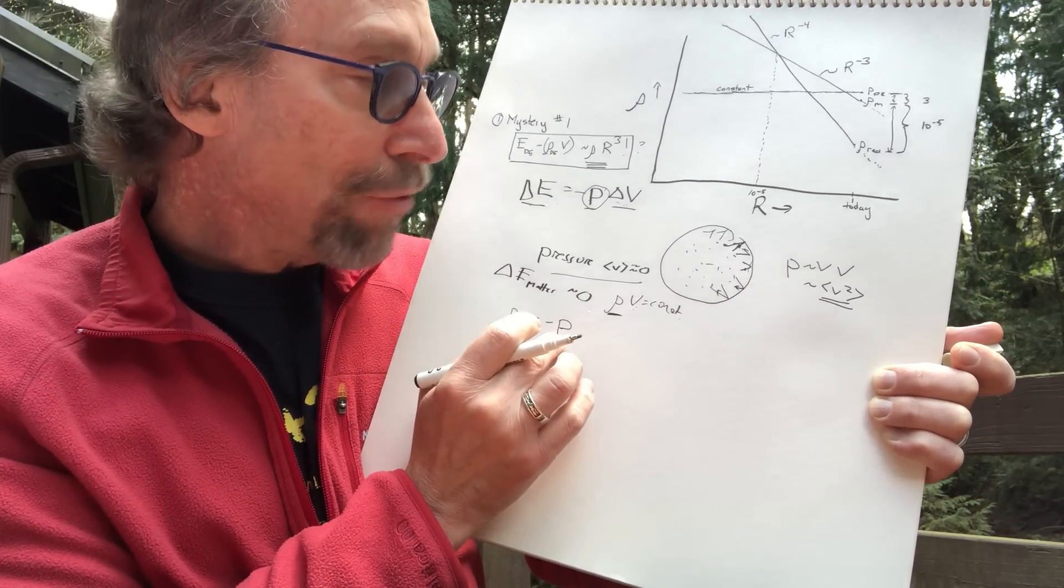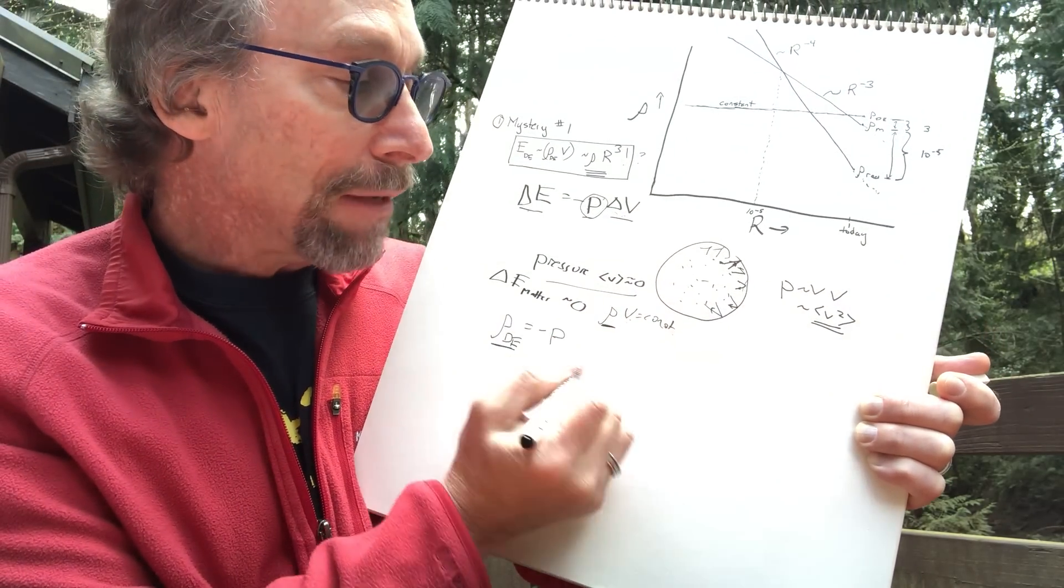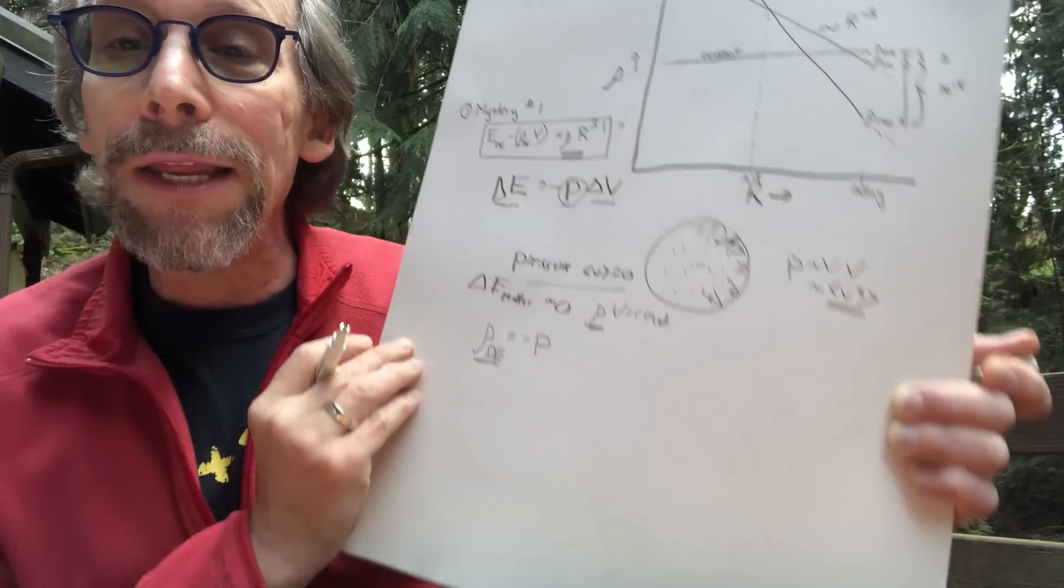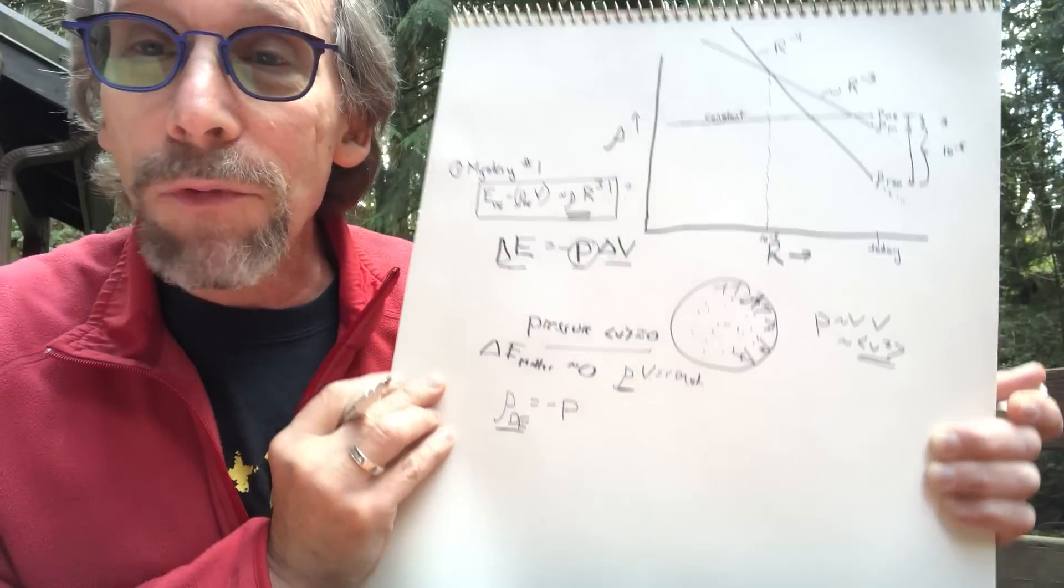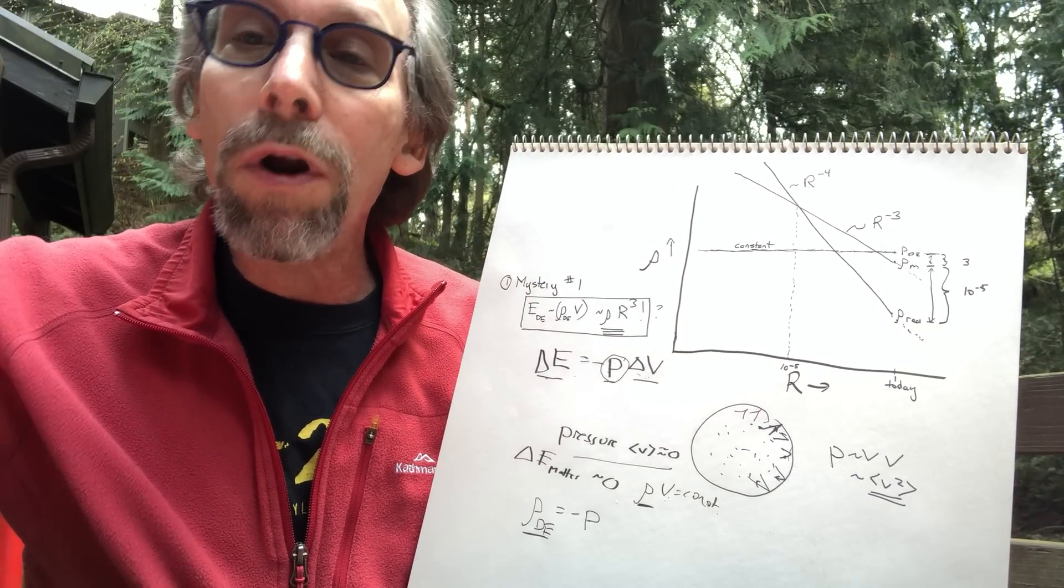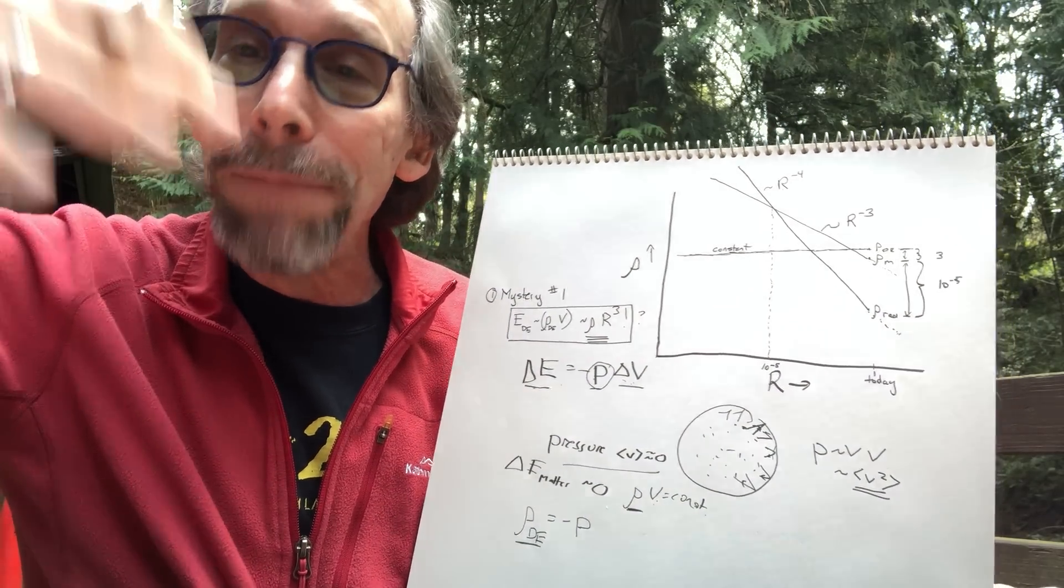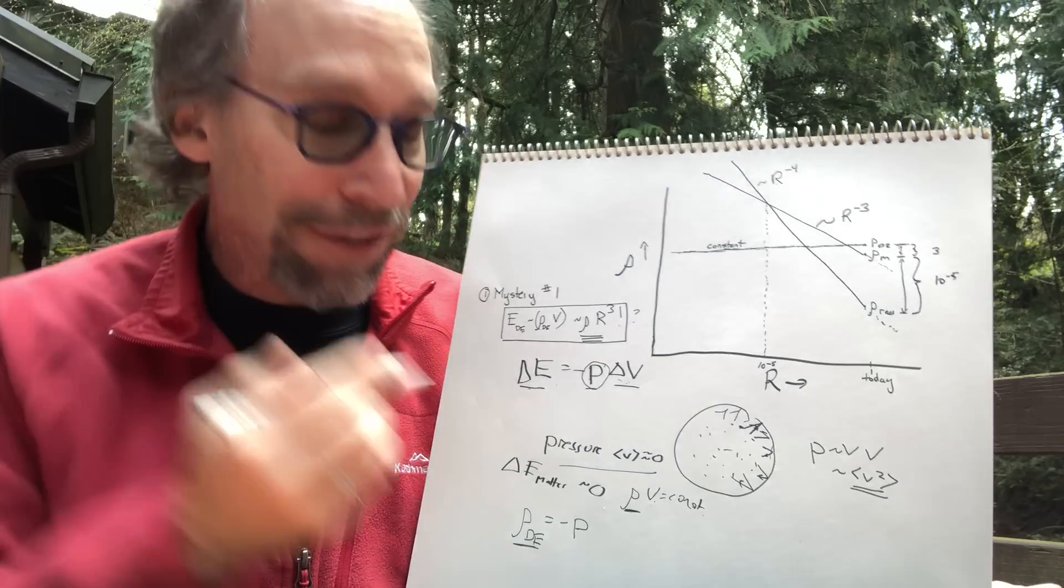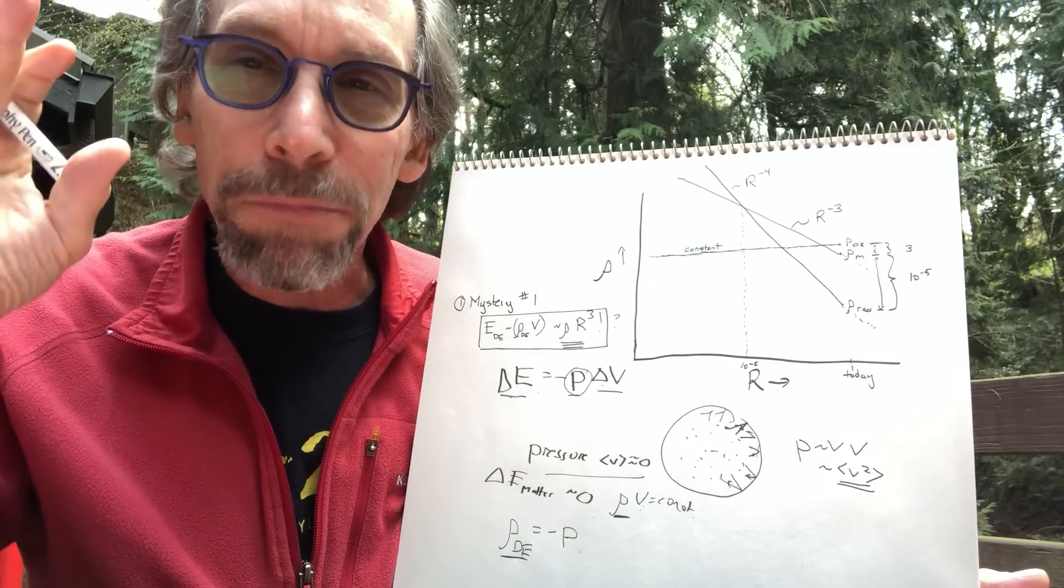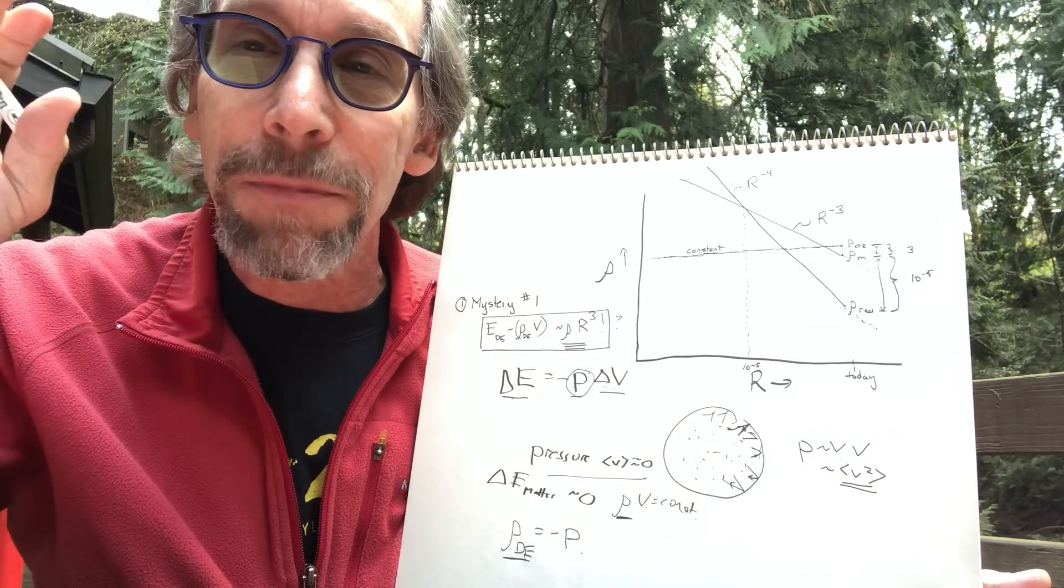And if the pressure is negative, then from this, this becomes positive. And that means that the total energy in empty space can grow. But you're not violating energy conservation. Because what you're doing is you're finding that space itself is actually doing work on the volume. The expansion of space is actually doing work on empty space in that volume. Because the pressure of the energy in empty space is negative. That's what's so weird. The pressure of energy deposited in empty space has to be negative.